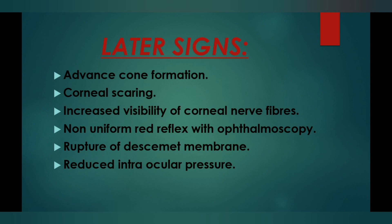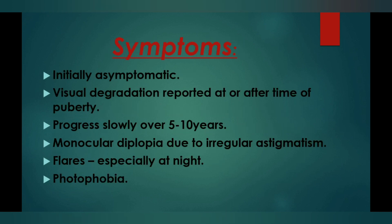Rupture of Descemet's membrane is also seen in later keratoconus — Descemet's membrane is a layer of the cornea that gets ruptured. Reduced intraocular pressure is also seen, because of the advanced cone formation.